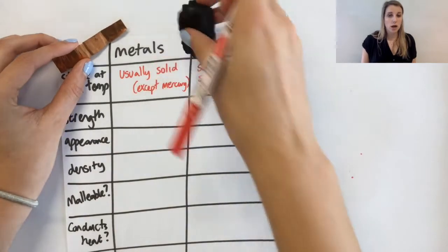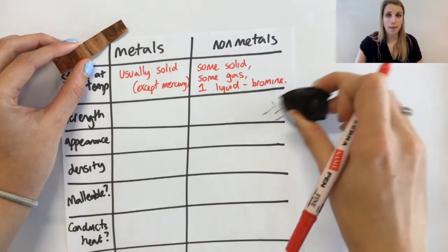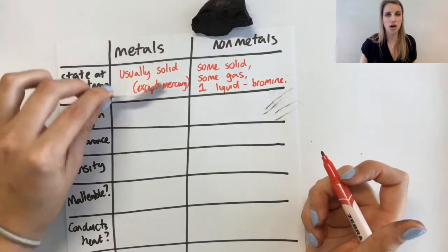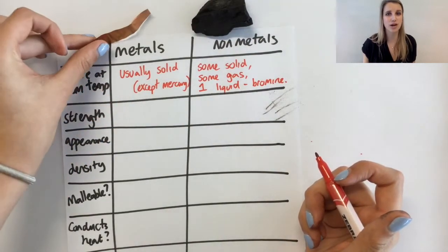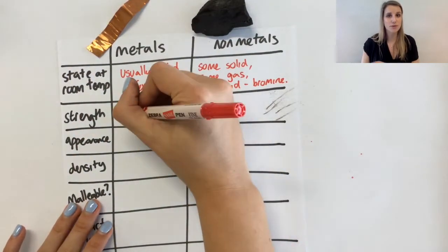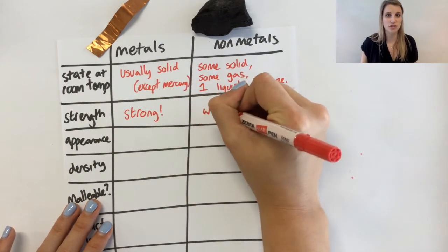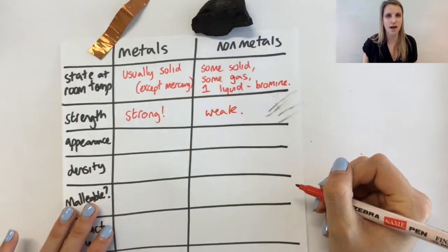Which one's stronger? A metal or a non-metal? Metals are way stronger than non-metals. If I look at the carbon here you can see it breaks down really easily. This happens with all non-metals. Metals, by comparison, are way stronger, used for bridges and buildings and things like that.